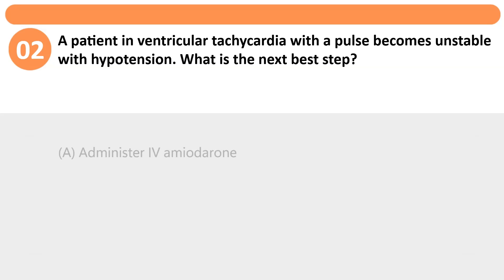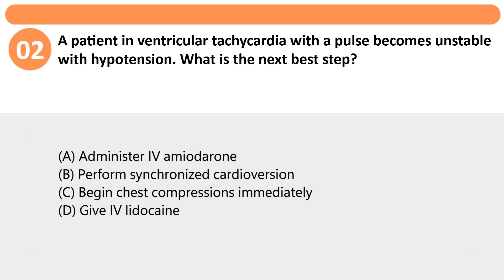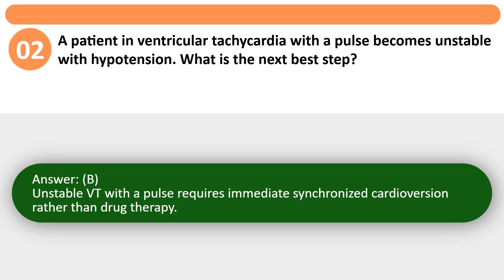A patient in ventricular tachycardia with a pulse becomes unstable with hypotension. What is the next best step? A. Administer amiodarone. B. Perform synchronized cardioversion. C. Begin chest compressions immediately. D. Give IV lidocaine. Answer: B. Unstable VT with a pulse requires immediate synchronized cardioversion rather than drug therapy.